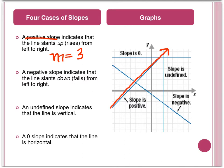The next case is a negative slope. That indicates the line slants down from left to right. And on the graph, it is the blue line that indicates a negative slope. An example of this would be m equals negative one-half.